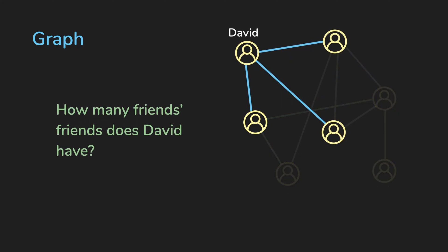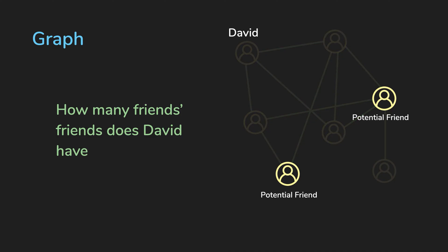Another question you can ask is, how many friends of friends does David have? Maybe David wants to make new friends and the easiest ones to make are friends of friends.